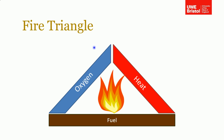At a very basic level, we need three things for combustion to take place — this is called the fire triangle. You need oxygen, you need heat, and you need fuel. If you take any one of these away, you can't sustain combustion. This is the principle behind fire extinguishers: CO2 extinguishers deplete the oxygen, water ones take away the heat. You also need these things in the right quantities, not just present.